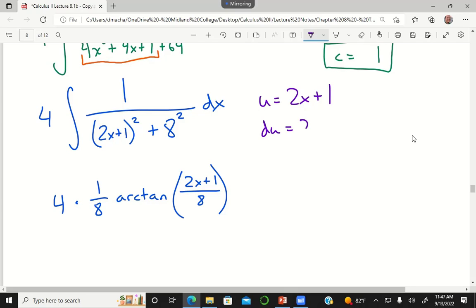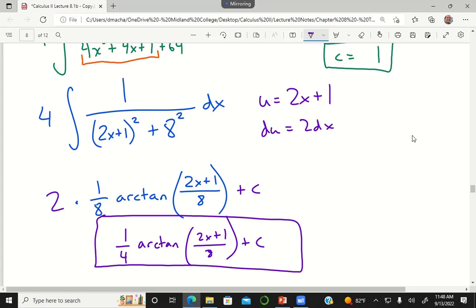That would make the 4 into a 2. 2 over 8 is just 1 fourth, so this is 1 fourth arc tan of 2x plus 1 over 8 plus c. Just times 1 over 8, need to be careful.